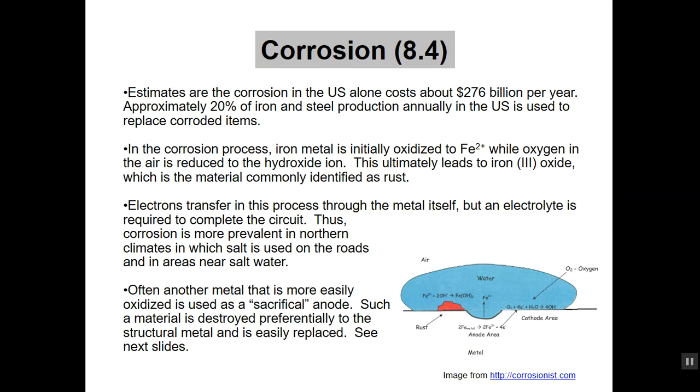A little bit about corrosion. Corrosion is a pretty big economical factor in the United States. About 20% of the iron and steel production is used to replace corroded items. So you'd like to prevent corrosion. In the corrosion process, iron metal actually is the element. Iron has no charge on it to start with, but it'll be oxidized to Fe2+ while the oxygen in the air gets reduced to hydroxide. Ultimately, you'll form iron 3-oxide, which is what we know as rust. The electrons in the process transfer through the metal itself. That iron conducts electricity, so it's kind of its own worst enemy in that sense.